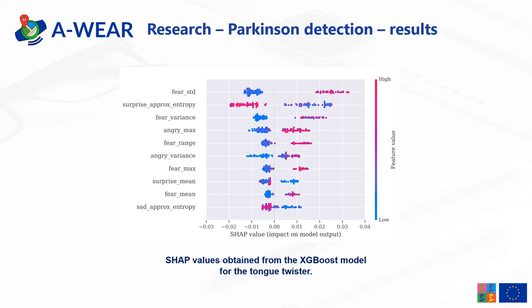However, approximate entropy of surprise and approximate entropy of sadness are negatively correlated with Parkinson's disease. To summarize, the changes in fear were captured best by features like standard deviation, variance, range, or mean. This could mean that this emotion is recognized during the speech exercise as a difficulty faced by PD patients, making them uncertain in their actions compared to healthy controls. Moreover, the approximate entropy of sadness and surprise being negatively correlated could indicate lower changes in the expression of these emotions for PD patients.